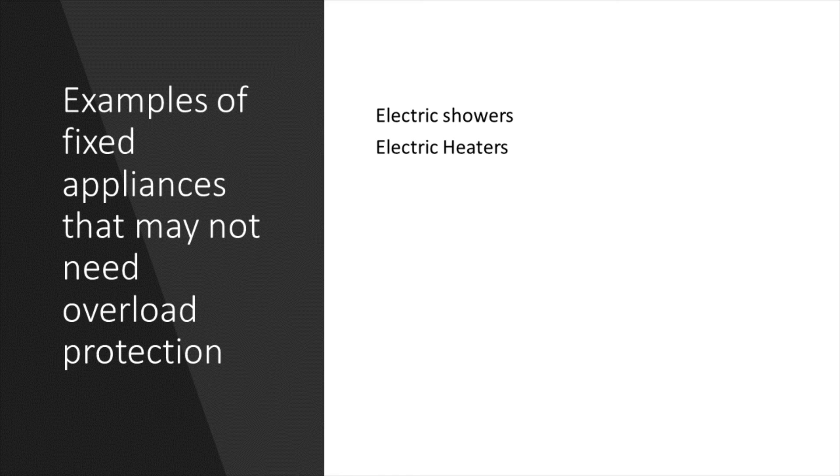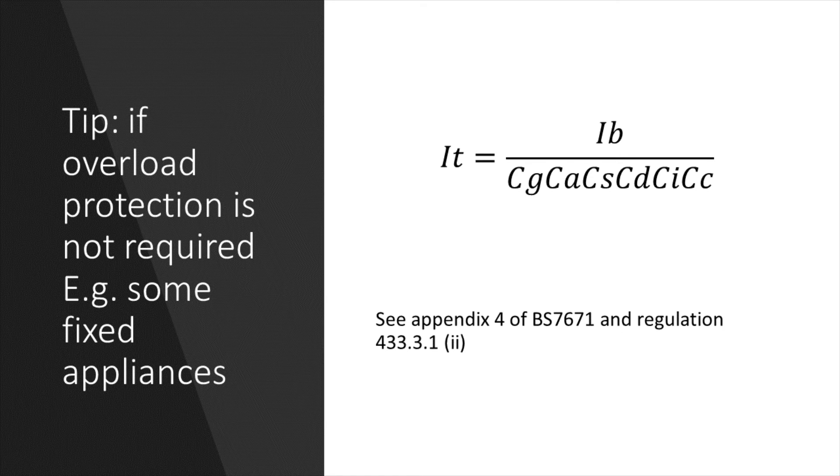Now when we say that overload protection need not be provided, in reality the overload protection device, such as an MCB, is installed. But what we can do is, when we calculate the IZ of the cable, we can divide the design current by the correction factors rather than the rating of the protective device IN.